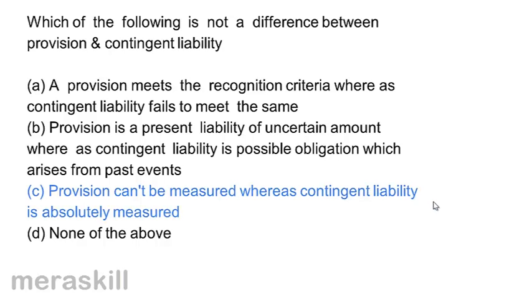Correct answer is C. 'Provision can't be measured, whereas contingent liability is absolutely measured' is wrong. Even contingent liability cannot be measured in absolute terms. So it is not really a difference between provision and contingent liability.